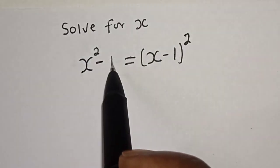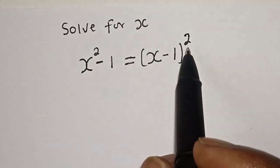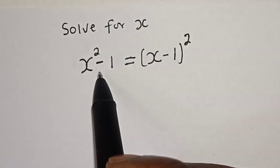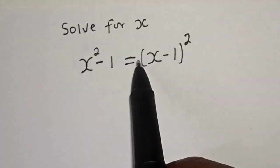So for x, x squared minus 1 is equal to (x minus 1) squared. Hi everyone, welcome to my class. In this class, I want to find the value of x from this nice equation.